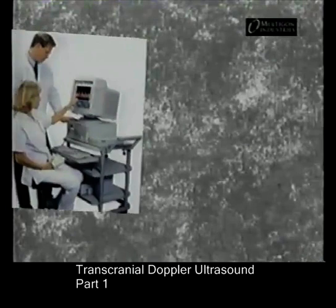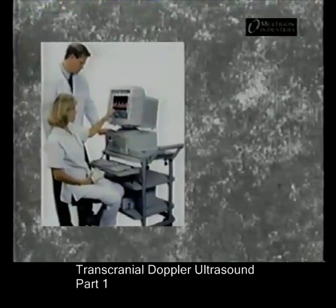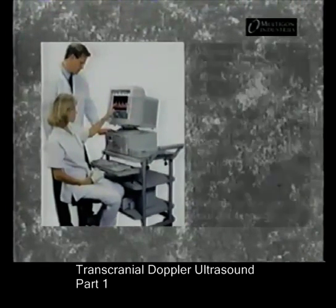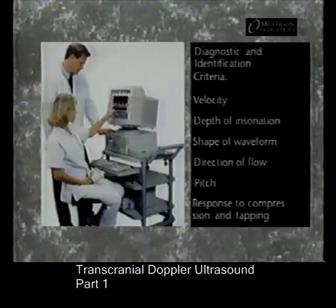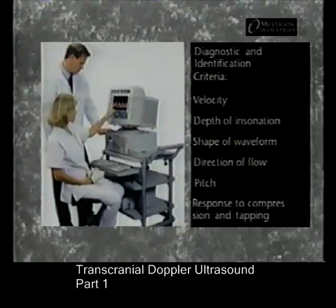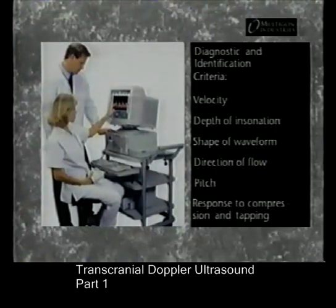TCD instruments send an ultrasound signal directly into an artery and analyze the return signal. Mean flow velocity and ratios of peak systolic to end diastolic velocity are used for interpretation. Identification of vessels is accomplished by controlling depth of insonation and evaluation of signal direction, velocity, pitch, and compression and tapping maneuvers. Criteria for vessel identification have been established through extensive correlation of TCD examination results with angiograms and other imaging modalities.